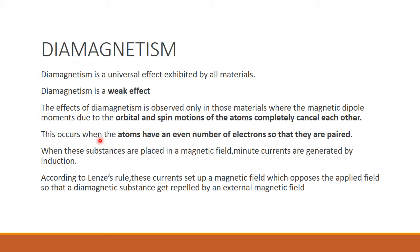Diamagnetism is a universal effect exhibited by all materials, and it is a weak effect. The effects of diamagnetism are observed in materials where the magnetic dipole moment due to the orbital and spin motions cancel each other. That is, the materials showing diamagnetism have paired electrons in their valence shell — an even number of electrons. When the valence electrons are paired, if there is an up spin, then correspondingly we have a down spin, so the dipole moments cancel each other.